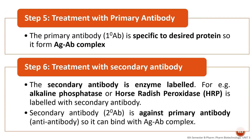Step 5 is treatment with primary antibody. We use a specific primary antibody to detect the desired protein through antigen-antibody interaction. Step 6 is treatment with secondary antibody, which is labeled with an enzyme such as alkaline phosphatase or horseradish peroxidase, to form an active antibody complex.